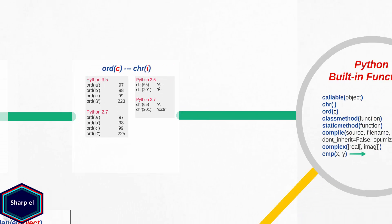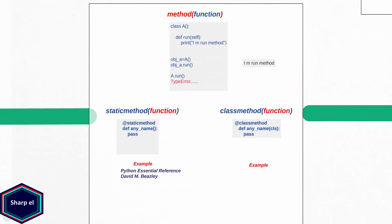Now let's move to staticmethod and classmethod functions in Python. For better understanding of static and class methods, let's first look at basic methods in Python. In this example, I have class A which has method run. A method in a class has always one compulsory parameter named self, which refers to the current object. If you know C++ or Java, self is equivalent to the this keyword. However, self is not a reserved keyword in Python like this in C++ or Java.